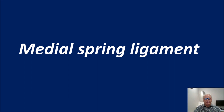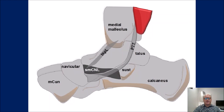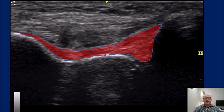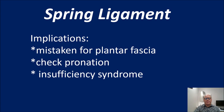The spring ligament — the medial spring ligament. Inside of the foot, the calcaneobicular ligament is the main portion we see. The black rectangle shows the position for scanning the spring ligament. The superior medial calcaneobicular ligament is the one we see mostly. These are often mistaken for plantar fascia. We need to check for pronation — this is commonly seen in tibialis posterior insufficiency syndrome, where people are over-pronating and can sprain this ligament.